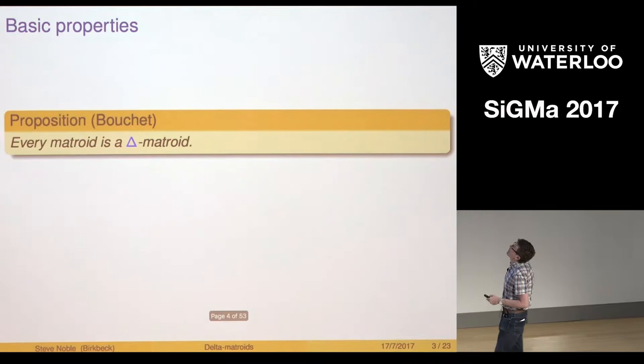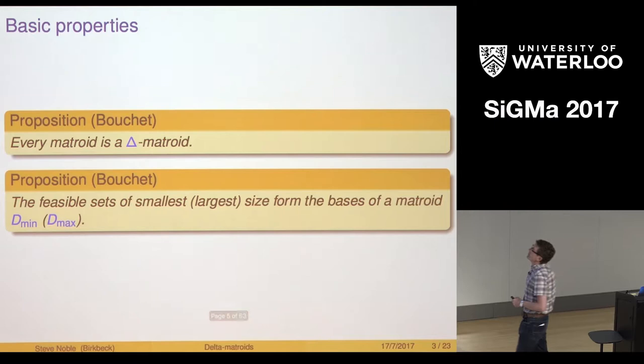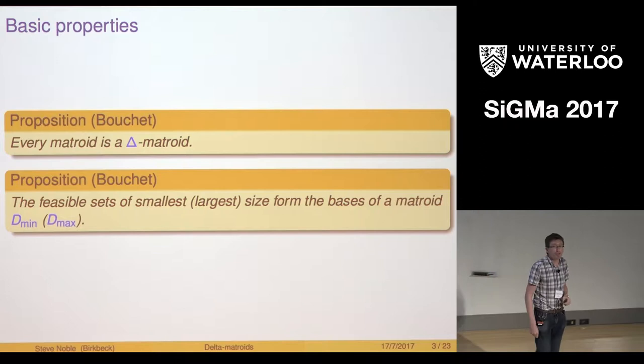What's the most basic thing you can say about Delta Matroids? Clearly from the definition every Matroid is a Delta Matroid. Second, if you look at the feasible sets of the smallest size they give you a Matroid. If you look at the feasible sets of the largest size they also give you the bases of a Matroid.